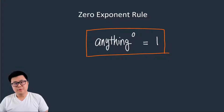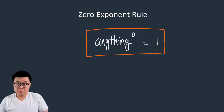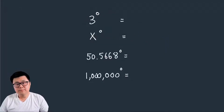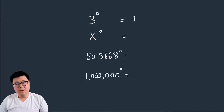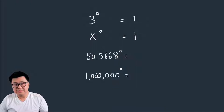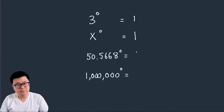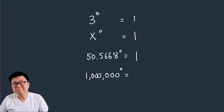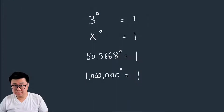The first rule we're going to learn is the zero exponent rule, which states that anything to the power of zero is equal to one. So, three to the power of zero equals one; x to the power of zero equals one; 50.5668 to the power of zero equals one; and one million to the power of zero — exactly, it equals one. Simple, right?